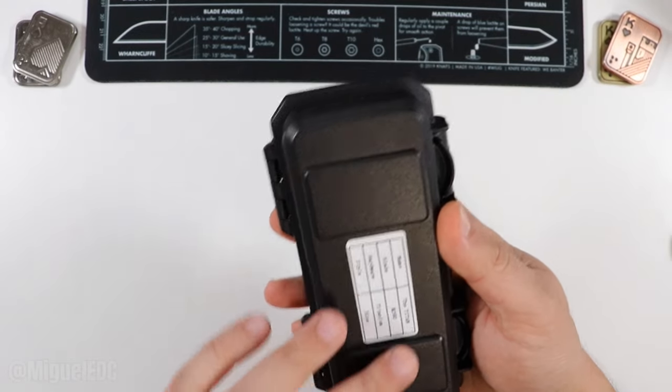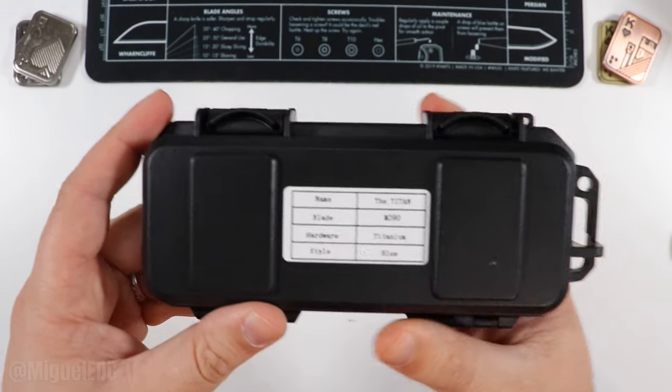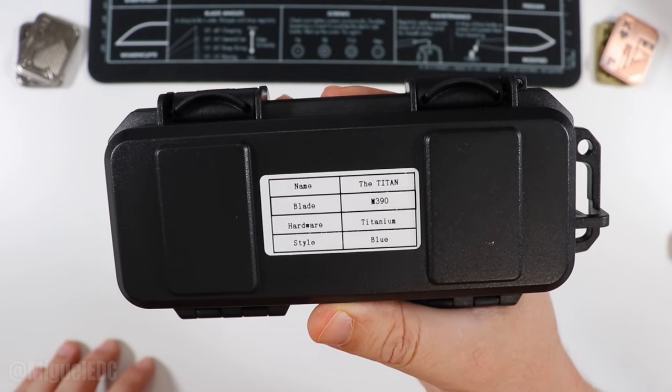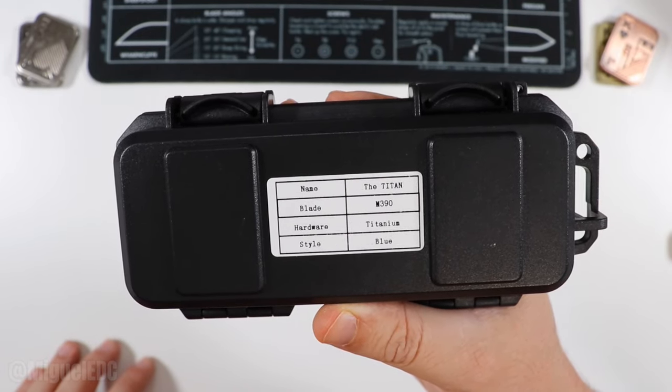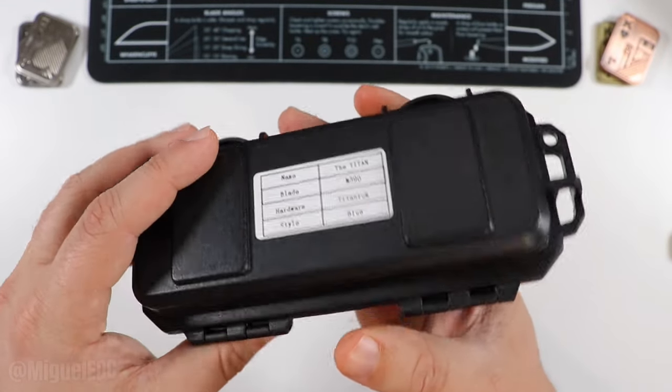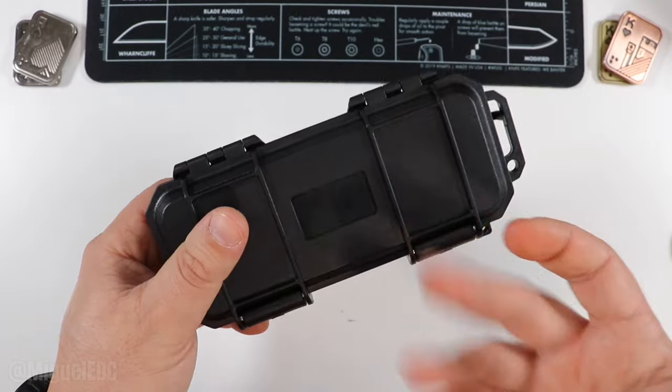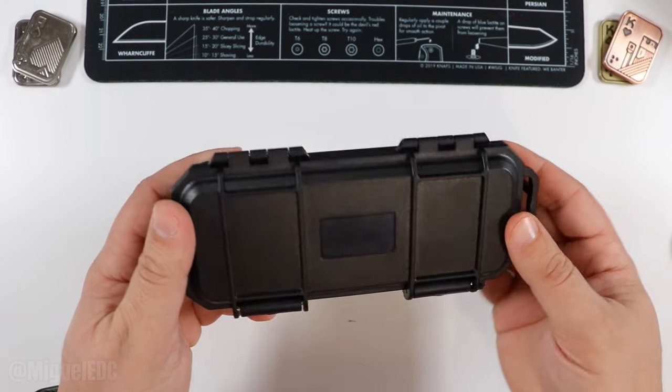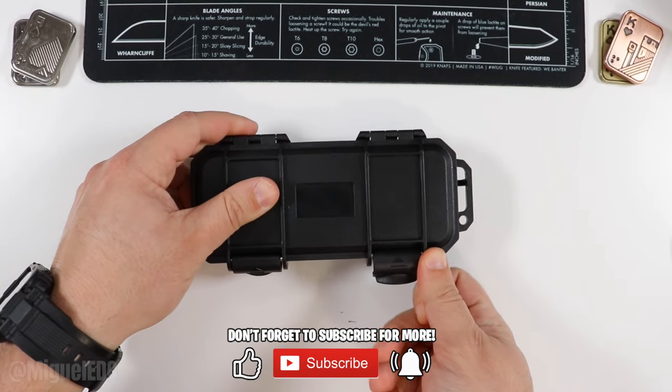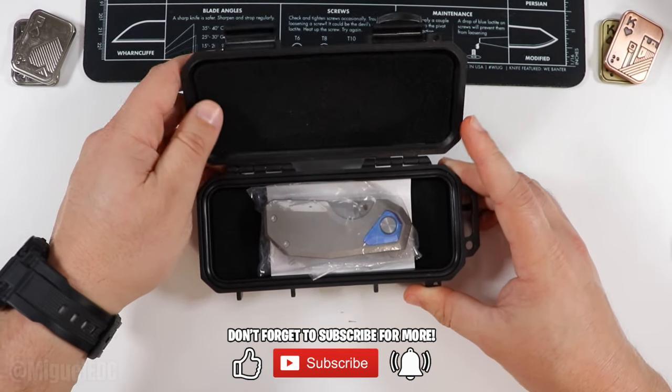And no clue what we're working with here unless we read the back. All right. Let's get started, Miguel. We have the Titan, Titan and M390 blade with titanium hardware, style is blue. So those are our cues going in here. Of course, I don't know what knife is in here, but you probably do based on the title and thumbnail. So let's just get to the thing here. Got the nice little plastic case going on, which I love. And bam. Let's take a look at this thing.